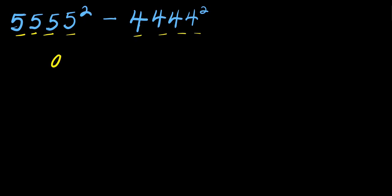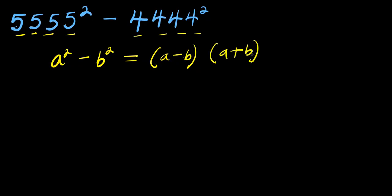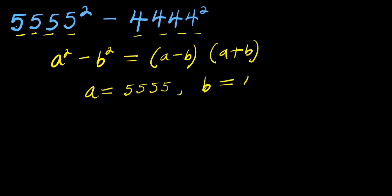The difference of two squares formula says: if you have a² minus b², this equals (a minus b) times (a plus b). In this case, a is 5555 while b is 4444.